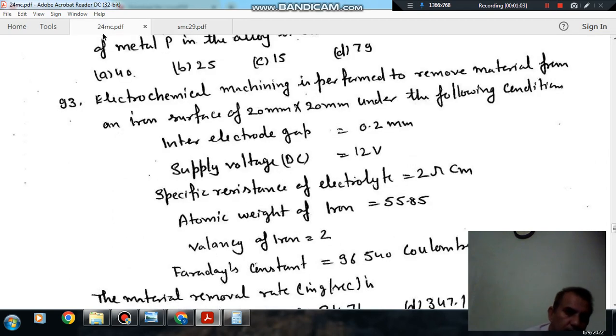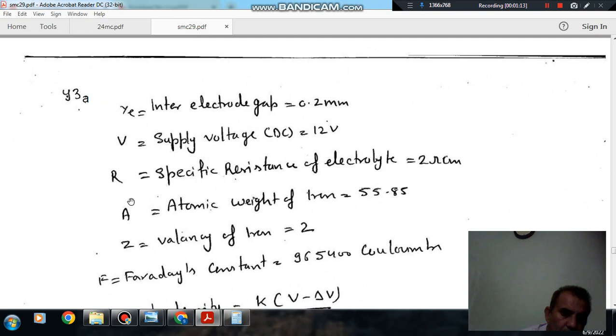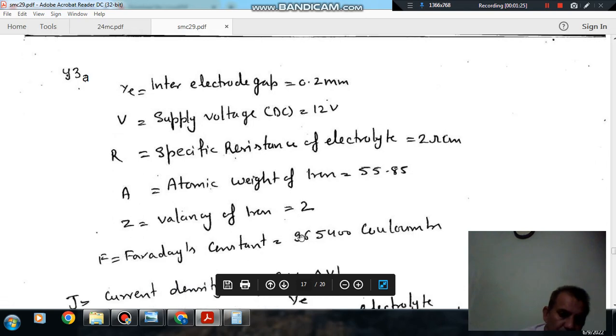So here, the given data are: inter electrode gap is 0.2 mm, supply voltage 12 volt, specific resistance of electrolyte is 2 ohm cm, atomic weight is 55.85, valency is 2, Faraday's constant is 96540 Coulomb.